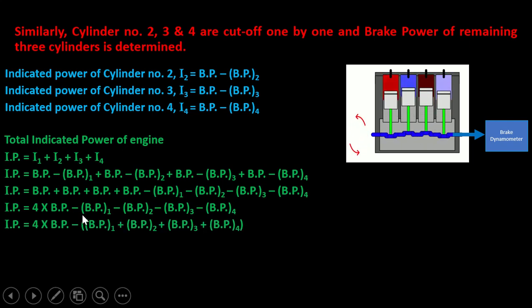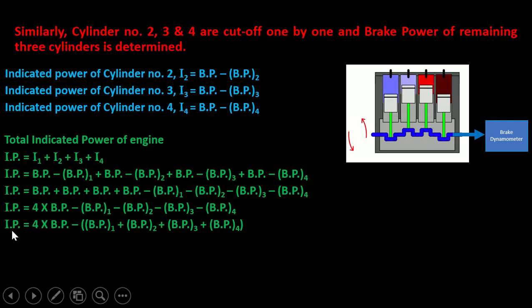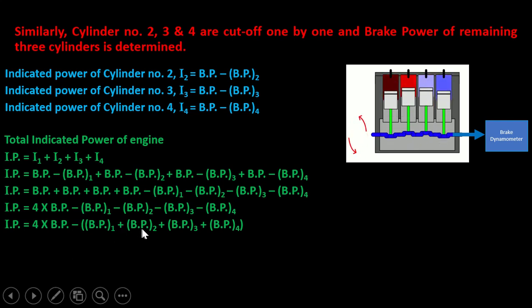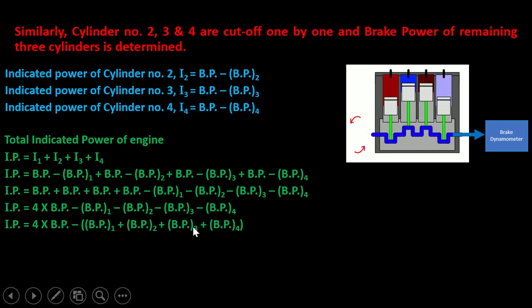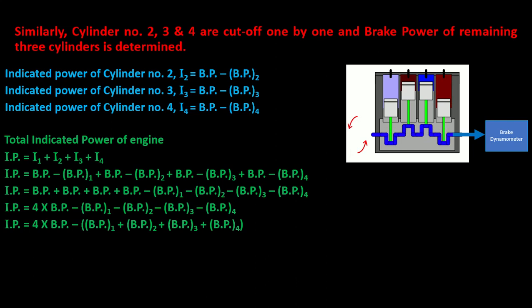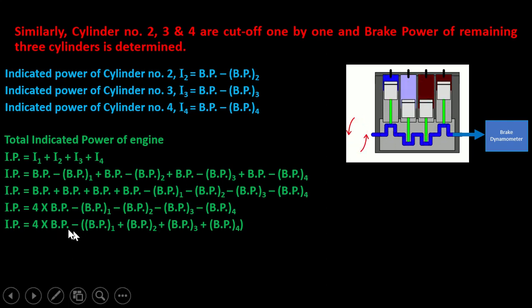Taking the minus sign as common, the total indicated power of the engine is: IP = 4 × BP − (BP1 + BP2 + BP3 + BP4), where BP1, BP2, BP3, and BP4 are the brake powers when cylinders 1, 2, 3, and 4 are cut off respectively. This formula gives the total indicated power by cutting off cylinders one by one.